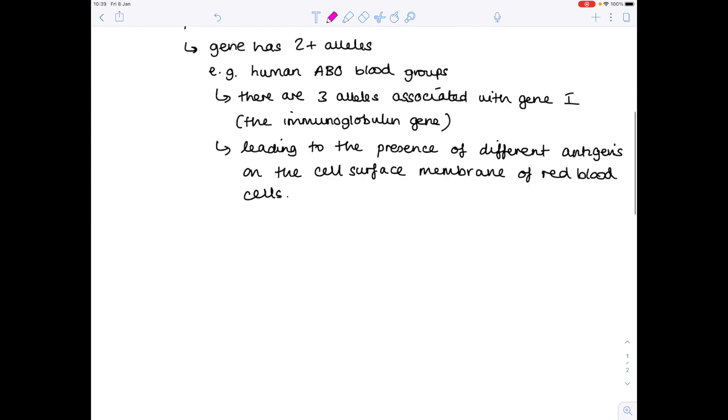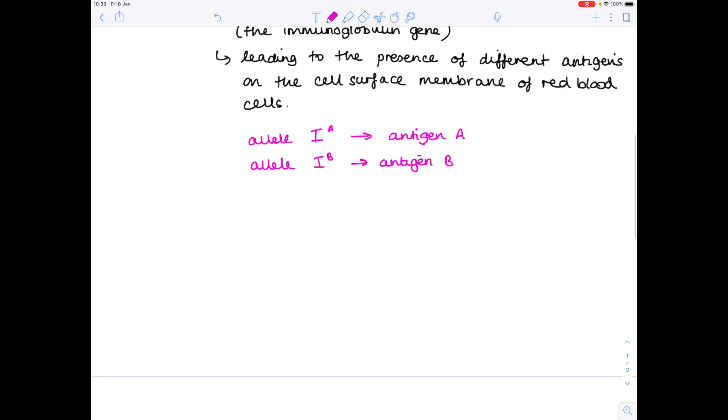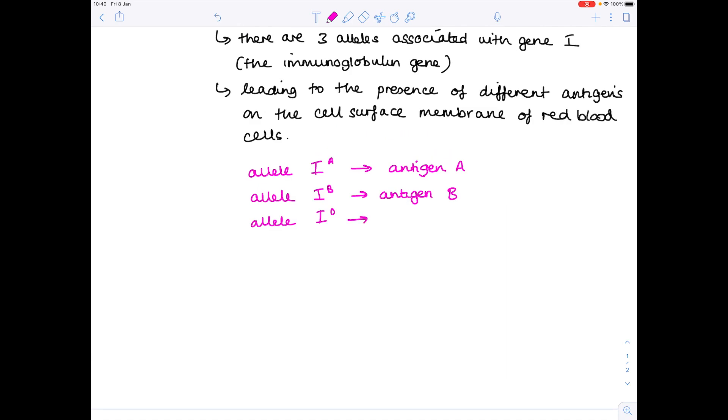And so this is the really important bit. Allele IA leads to the production of antigen A. Allele IB leads to the production of antigen B and allele IO which actually doesn't lead to the production of either antigen. So there's no A or B produced.